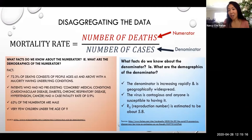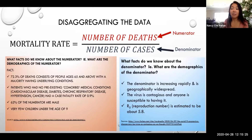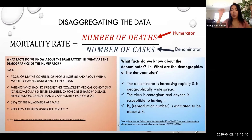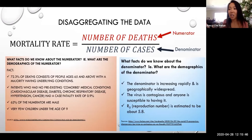Now let's look at the denominator. We looked at the numerator, so we've got to question the denominator as well. What facts do we know about the denominator? Well, we know the denominator is increasing rapidly. The number of cases is increasing every single day, and it's geographically widespread. We see those maps with big red dots all over the world getting bigger and darker and spreading. The virus is contagious and anyone is susceptible to it.